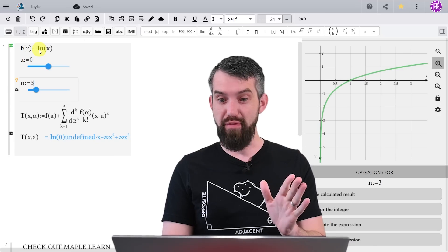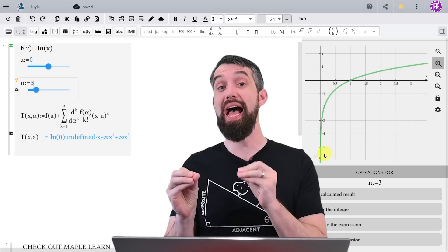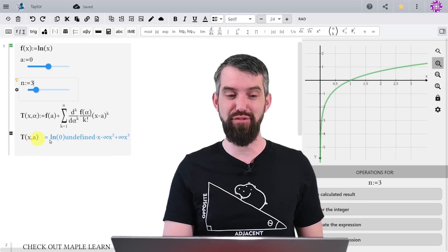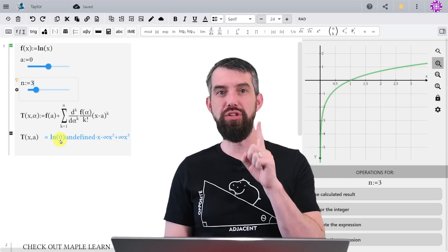If I plot logarithm of x, this is the graph of it. And the problem is that logarithm is not defined at 0. If I try to compute as a Taylor formula, then Maple Learn is going to tell me that it's just undefined. So what can I do instead?